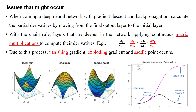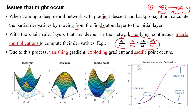The training of a deep neural network with gradient descent during back propagation applies partial derivatives by moving from the final output layer to the initial layer. Suppose you have two layers — this is the input layer x1, then one hidden layer neuron a1, and then output layer a2. When we calculate the output, we get an error. When there is an error, we apply back propagation to calculate the gradients step by step.